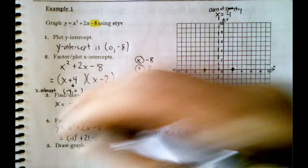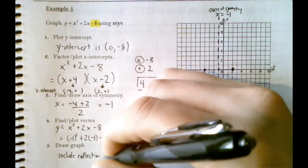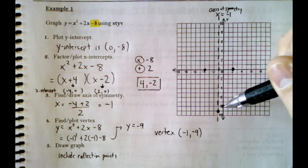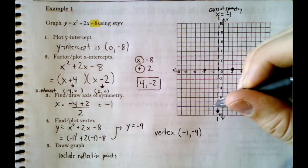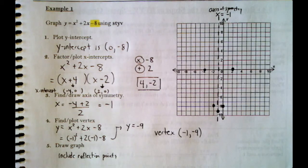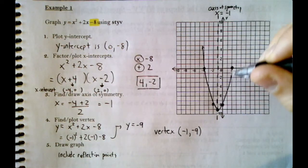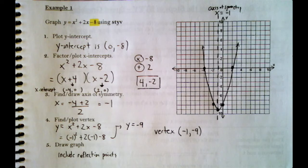The last step is to draw the graph including reflection points. Any point on one side of the axis gets reflected to the other side. The y-intercept (0, −8) is one unit from the axis, so we reflect it to get a point one unit on the other side. Now we have five dots and can connect them to draw the parabola.